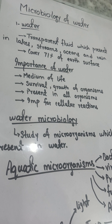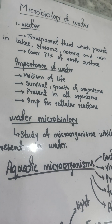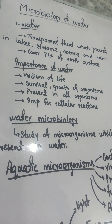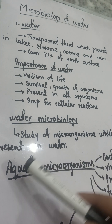Water is essential for the survival and growth of all organisms on Earth, whether human beings, animals, or plants. About 60 to 70 percent of our bodies is composed of water. Water is very important for various cellular reactions and metabolic reactions taking place inside the body. Water microbiology deals with the study of microorganisms present in lakes, streams, oceans, and rain.